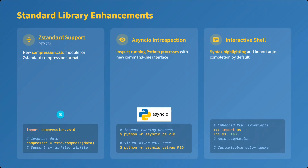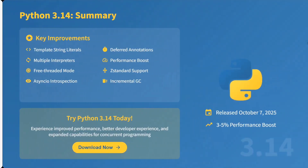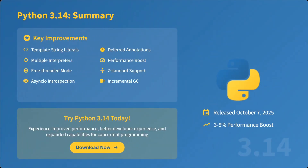Other notable features include a safe external debugger, syntax enhancements for cleaner syntax, and an improved incremental garbage collector. New modules have also been introduced, such as annotation-lib, compression, concrete interpreters, and string template lib.